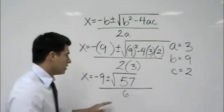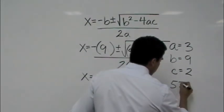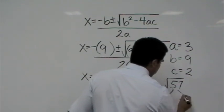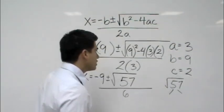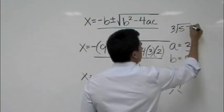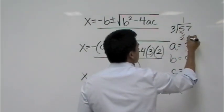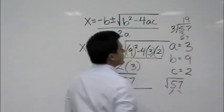Well, actually, you can. You can do 57. The square root of 57 would be, well, we know that 3 goes into it. So how many times does 3 go into 57? Let's find out. It goes in there one time. It goes in there 19 times.